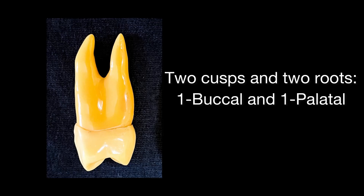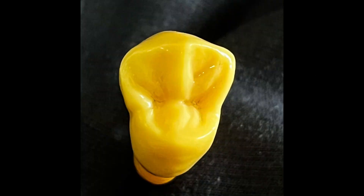The maxillary first premolar has two cusps and two roots — one buccal and one palatal. The crown of the maxillary first premolar is hexagonal in shape with sharp buccal line angles. The buccal cusp is larger than the palatal cusp.